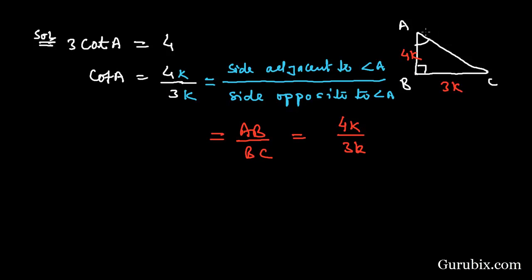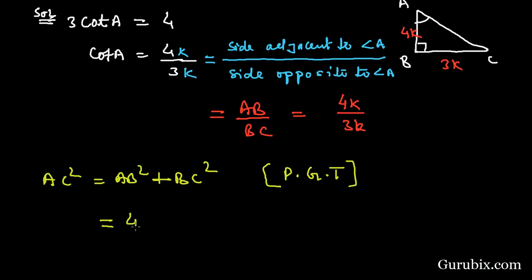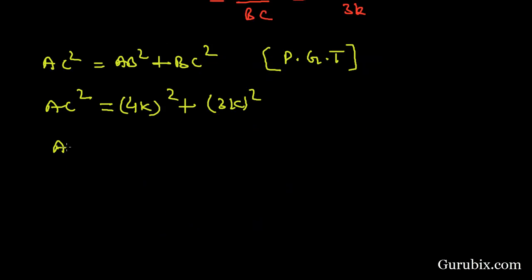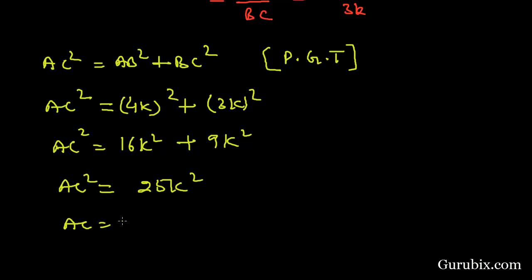Now we shall find the hypotenuse of triangle ABC by applying the Pythagorean theorem: AC² = AB² + BC². Substituting, AC² = (4k)² + (3k)² = 16k² + 9k² = 25k². Therefore AC = 5k.